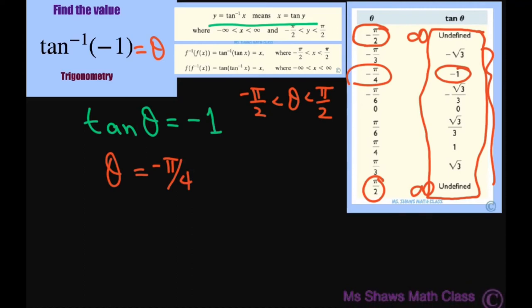I want to stress, when you have your unit circle like this, when it says it's restricted from negative π/2 to π/2, that means you can't even use this side. So you can't make this 7π/4.